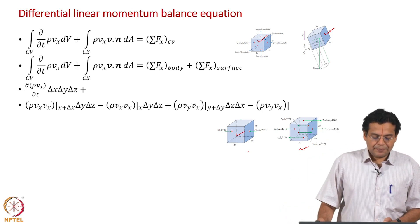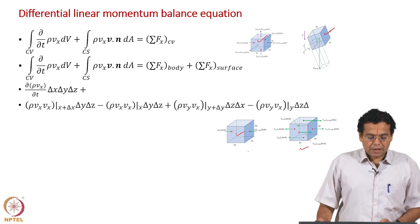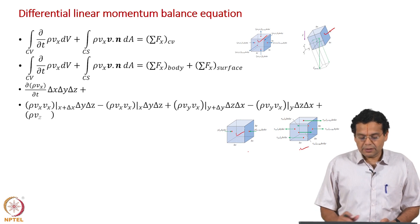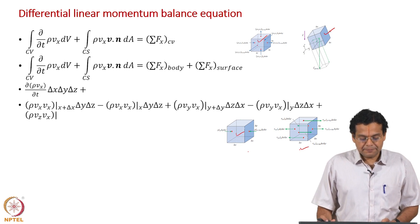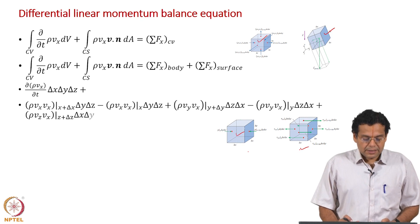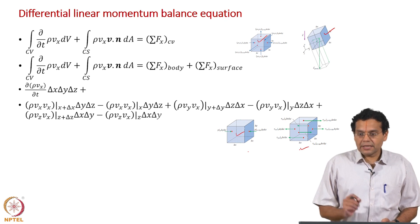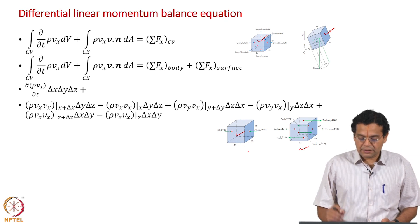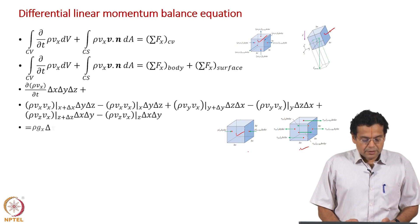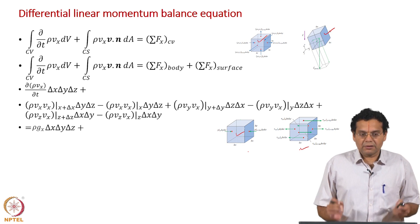Let us write down expressions for all the terms — the rate of change of momentum and the convective momentum terms. These are not new to us; we have come across them a few times. The first two terms are due to flow in the x direction, the next two because of flow in the y direction, the last two because of flow in the z direction. But remember, the second velocity is always x — we are writing momentum balance along the x direction.